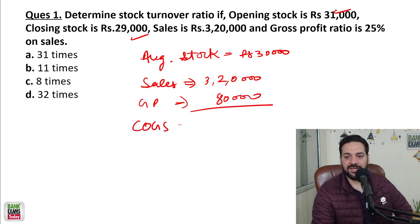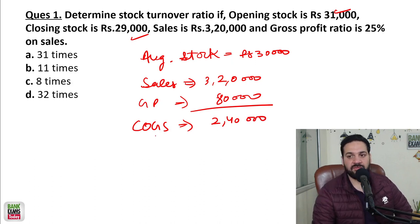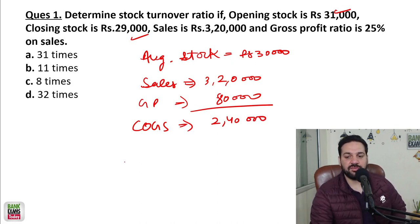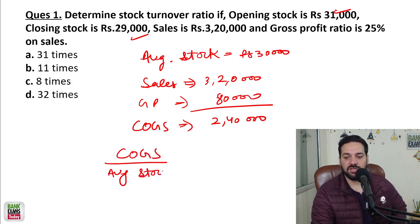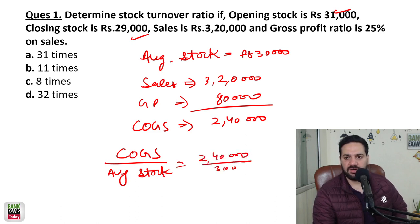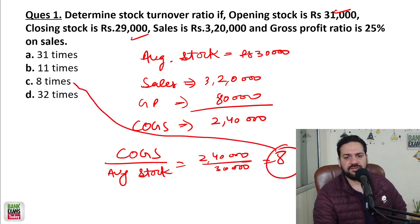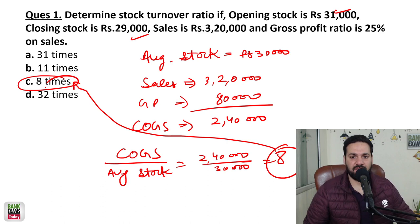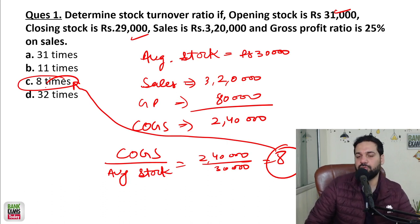So the cost of goods sold is 3,20,000 minus 80,000, which equals 2,40,000. We need to calculate the stock turnover ratio, which is cost of goods sold divided by average inventory or average stock. So the answer is 2,40,000 divided by 30,000, which equals 8 times. That is the stock turnover ratio.